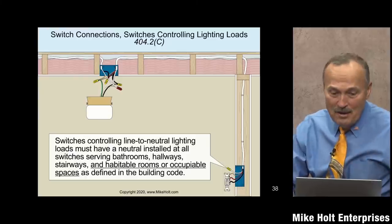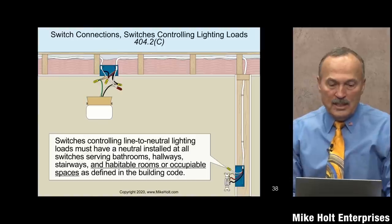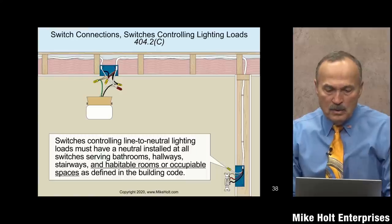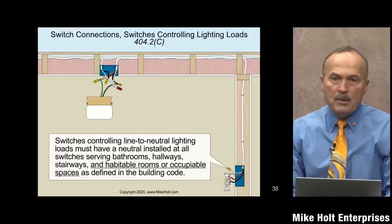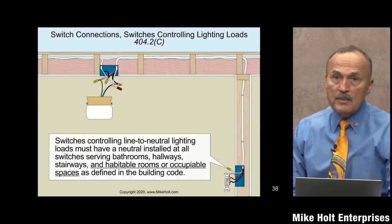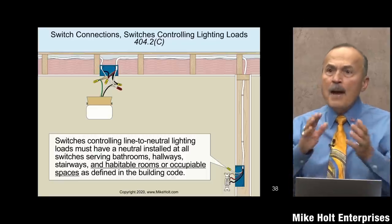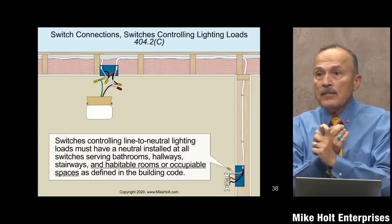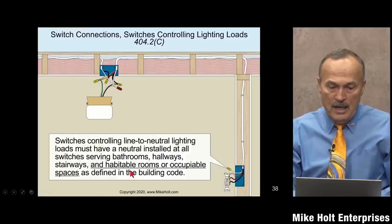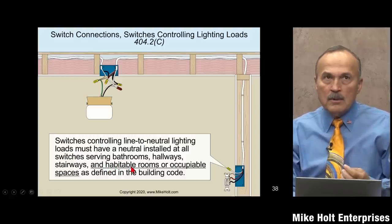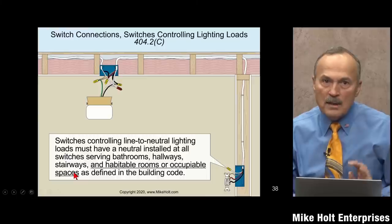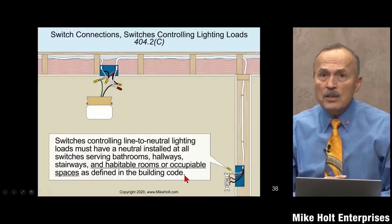Section 404.2C — switches controlling line and neutral lighting loads must have a neutral installed. All switches serving bathrooms, hallways, stairways, habitable rooms — which includes sleeping, living, eating, kitchen and cooking areas — and dining rooms must have a neutral at the switch location.